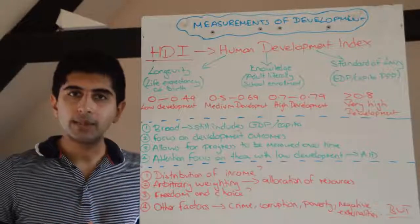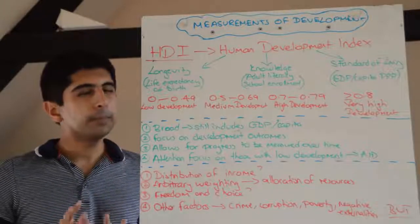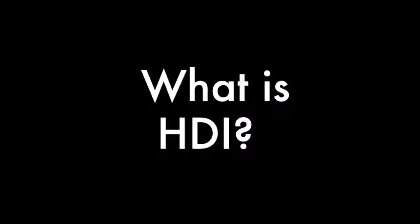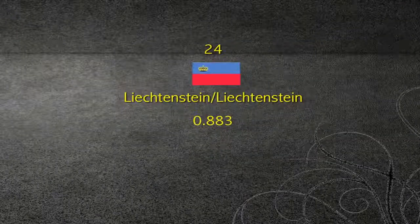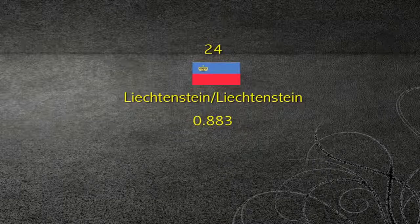The index is based on the human development approach, developed by Amartya Sen, often framed in terms of whether people are able to be and do desirable things in life. Examples include being well-fed, sheltered, healthy, doing work, education, voting, and participating in community life.